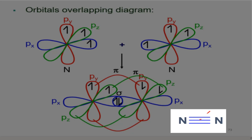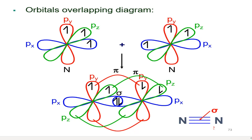Nitrogen gas will have triple bond. One is a sigma bond, the other 2 are pi bonds.